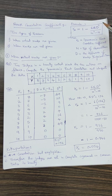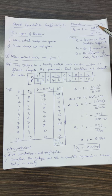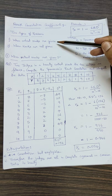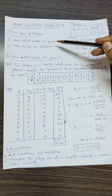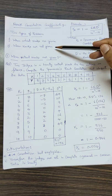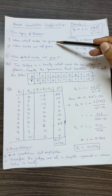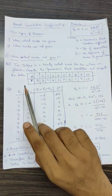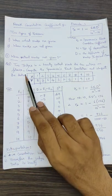To understand this better, we will first look at the different types of problems that can appear in the examination. There are two types: number one, when the actual ranks are given, and number two, when the ranks are not given. Let us learn the first concept — when the actual ranks are given.